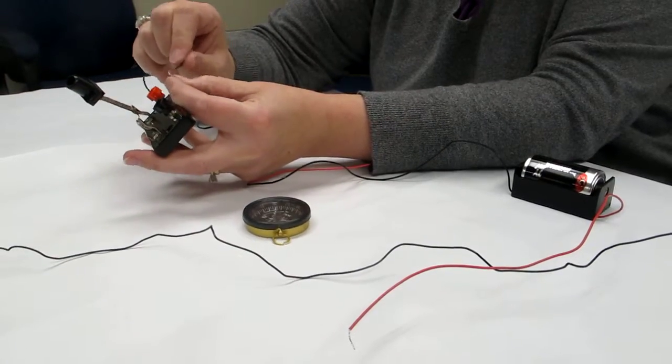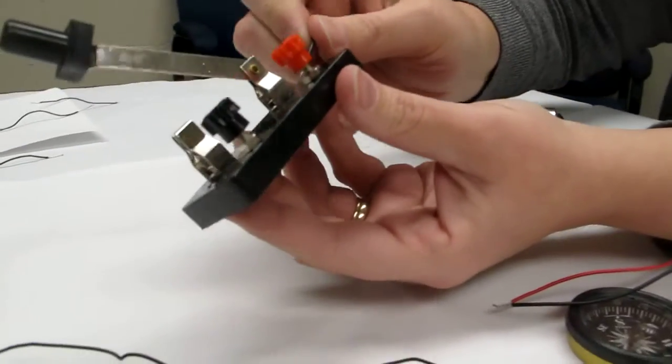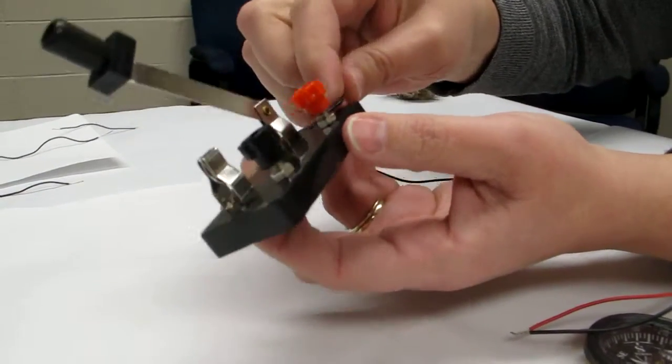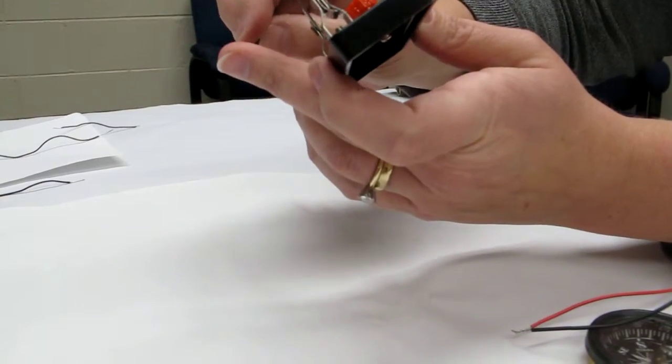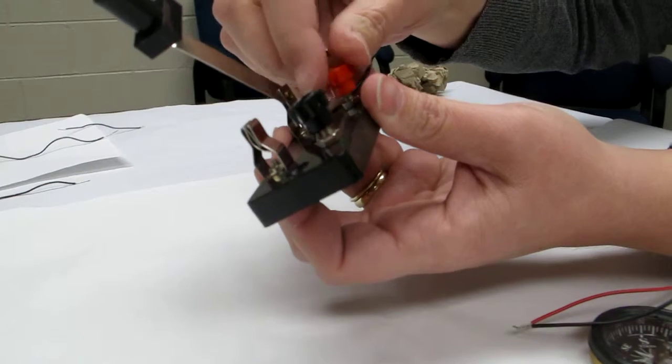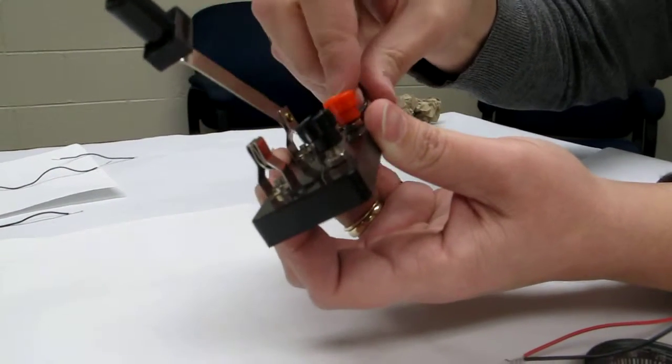You want to bend the stripped end of the wire and attach it to the exposed screw on the bottom of the knife switch. You may need to bend the wire a little bit more and then screw that down to make a firm contact.